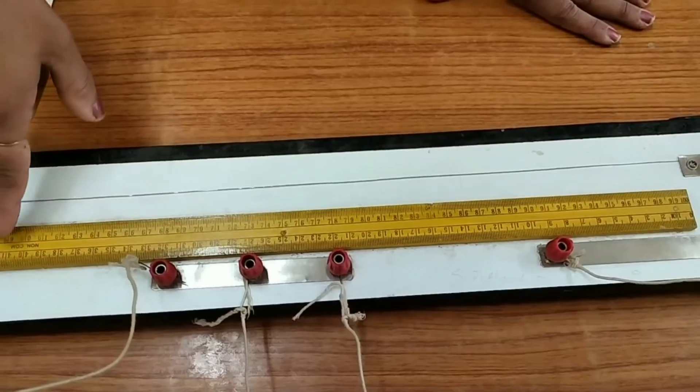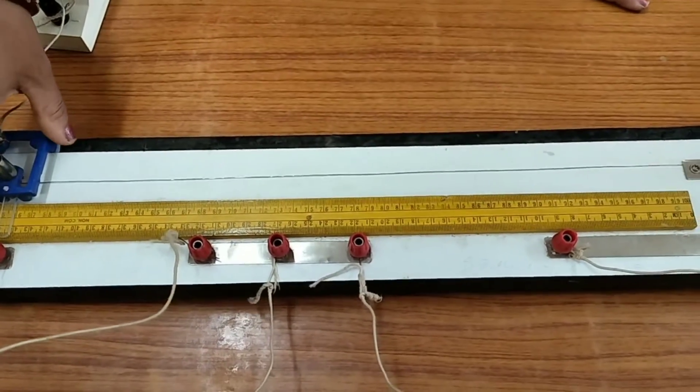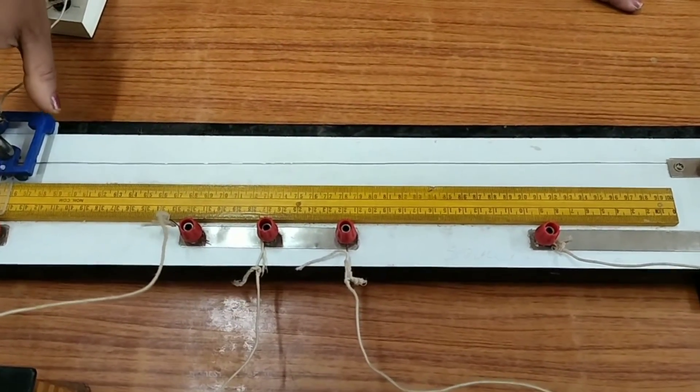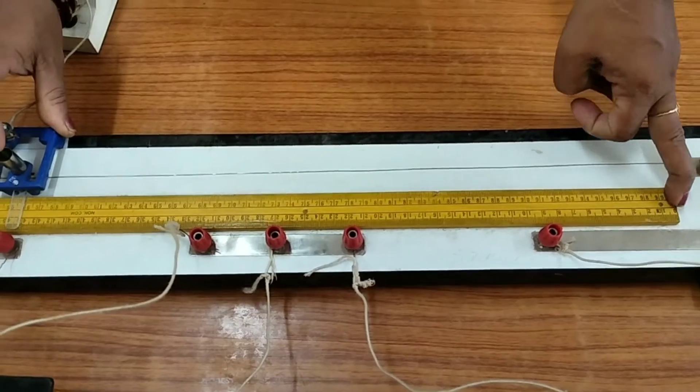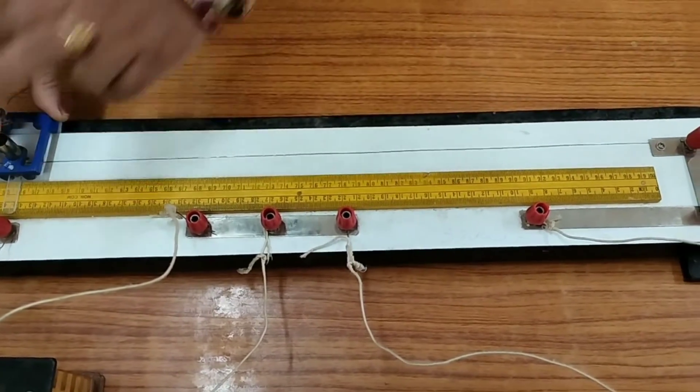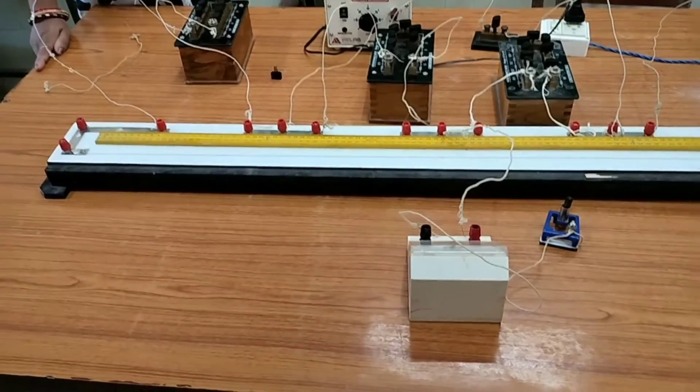You see, this is the null point from here - this is from 0 to this length where you find the null point. This is the reading of L1.